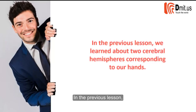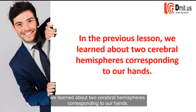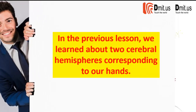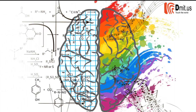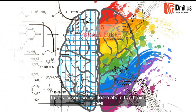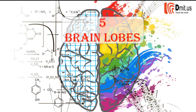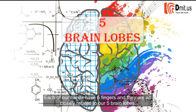In the previous lesson, we learned about two cerebral hemispheres corresponding to our hands. In this lesson, we will learn about five brain lobes. Each of our hands has five fingers and they are all closely related to our five brain lobes.